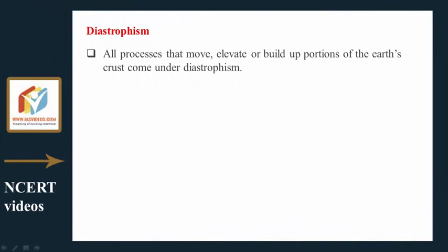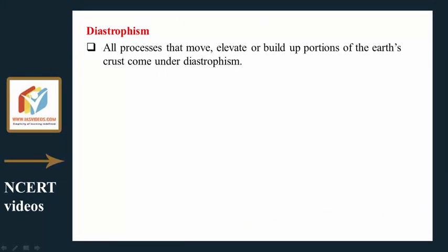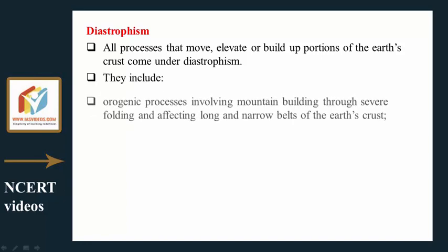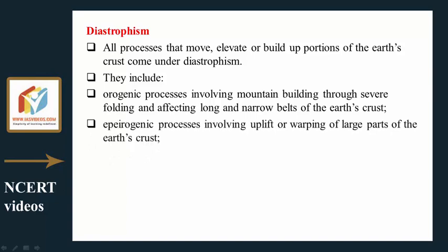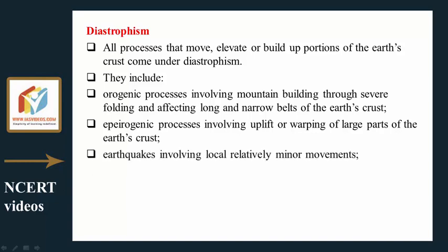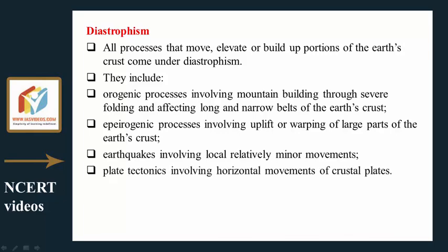Diastrophism includes all processes that move, elevate, or build up portions of the earth's crust. These include: orogenic processes involving mountain building through severe folding, affecting long and narrow belts of the crust; epiogenic processes involving uplift or warping of large parts of the crust; earthquakes involving local relatively minor movements; and plate tectonics involving horizontal movements of crustal plates.